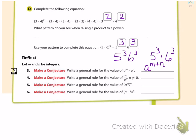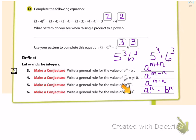When we have a product of powers, a to the m times a to the n, we simply add the exponents to get a to the m plus n. When dividing powers we subtract exponents: a to the m divided by a to the n equals a to the m minus n. When taking a power to a power we multiply the exponents: a to the m, raised to the n, equals a to the m times n. When a product is raised to a power, we separate the factors and raise each to that same exponent: a times b to the n equals a to the n times b to the n.